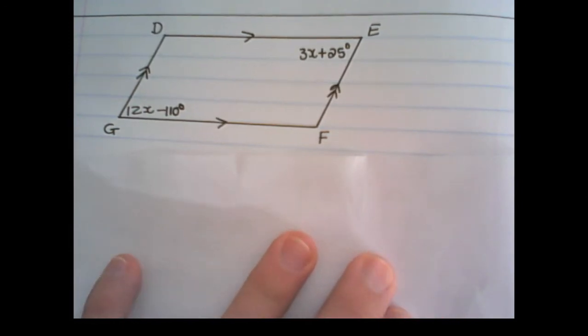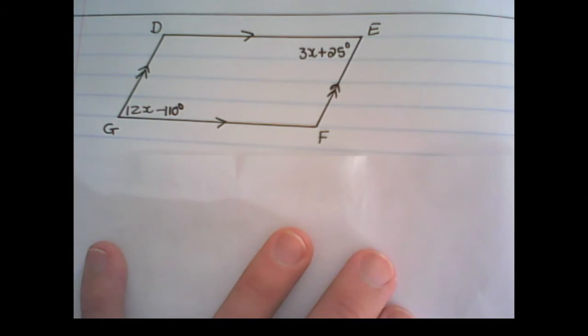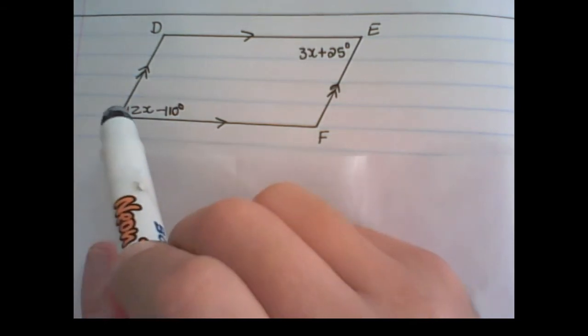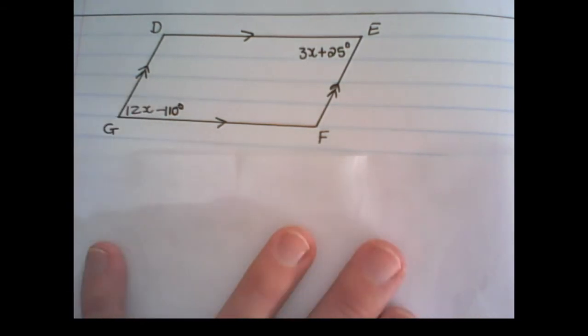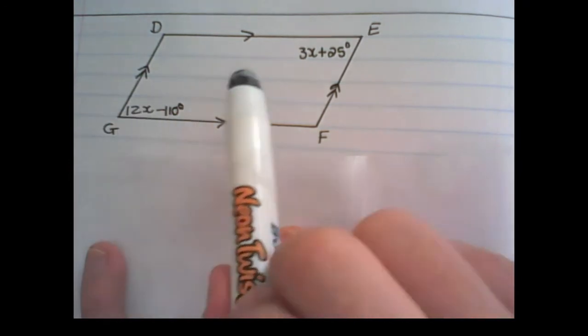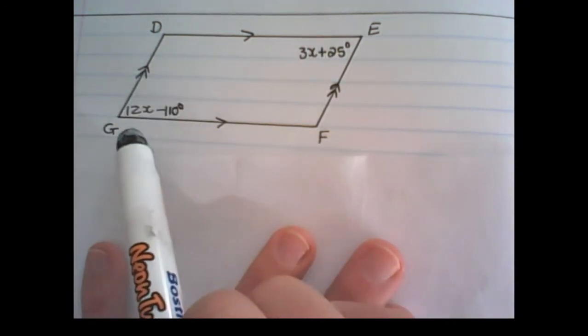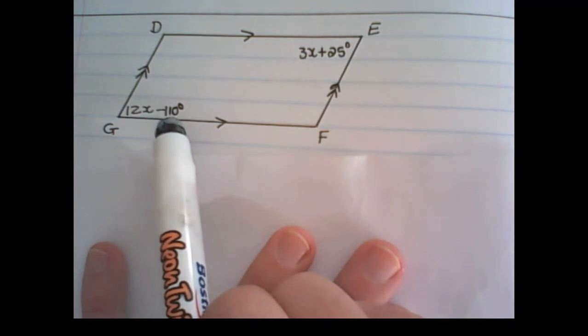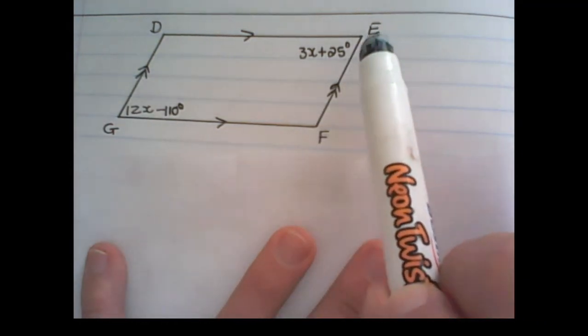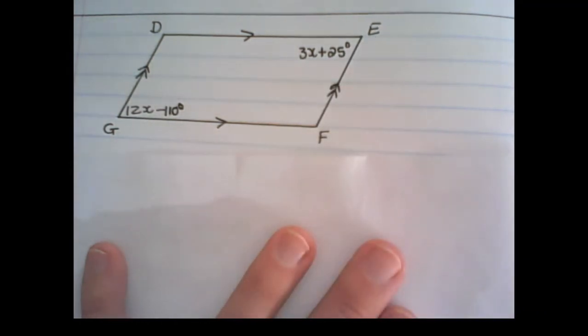In our second example we have the figure DEFG, and we want to find the angle size of G. We don't have any other information except that angle G is 12x minus 110 degrees, and that angle E is 3x plus 25 degrees.